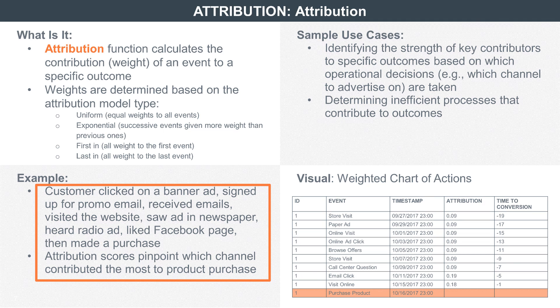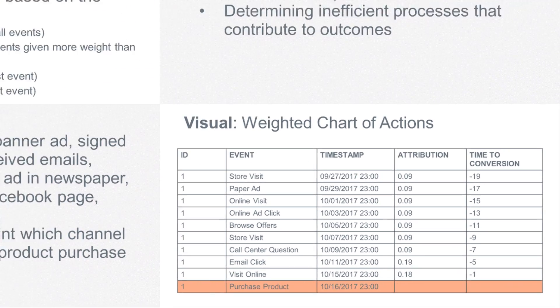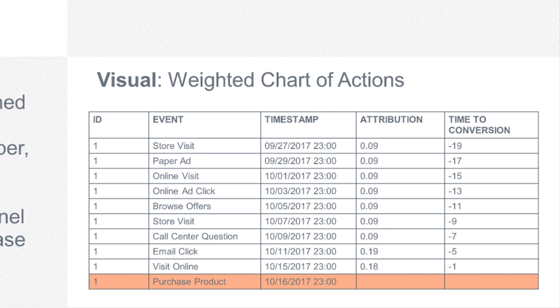and later decides to call the call center of the company to ask a few questions. After all this, she purchases the product. When companies look at the sequence of activities, they want to understand which action contributed the most to her purchase decision — was it the first newspaper ad? Or was it the call center conversation? Or something else in between?